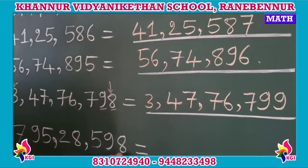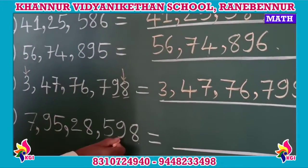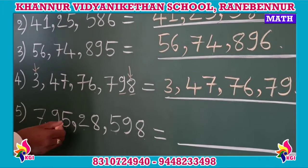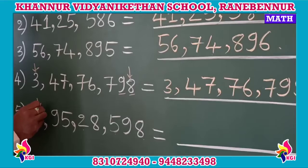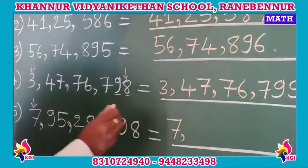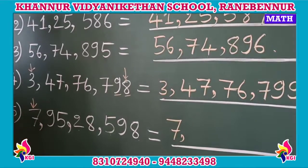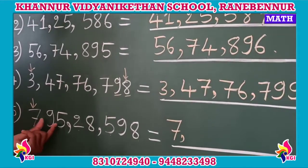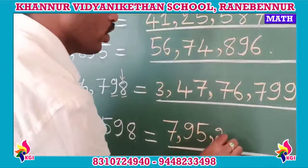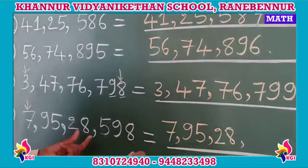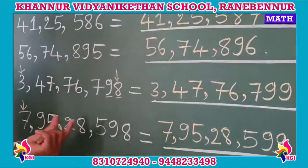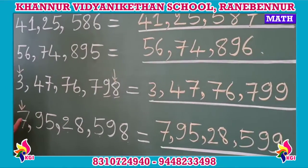The fifth and last number has digits in the ones, tens, hundreds, ten-thousands, lakh, 10-lakh, and crore places. The number is 7 crore, 95,28,599. The successor is 7 crore, 95,28,600.